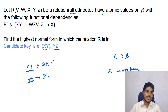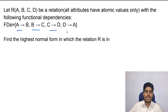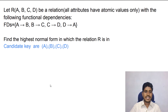Now let's see another example. Let R(A, B, C, D) be a relation with the following functional dependencies: A determines B, B determines C, C determines D, D determines A. Find the highest normal form in which the relation R is in. First we have to find the candidate key. In this relation, the candidate keys are A, B, C, and D.